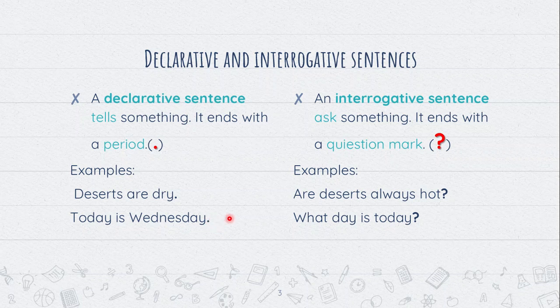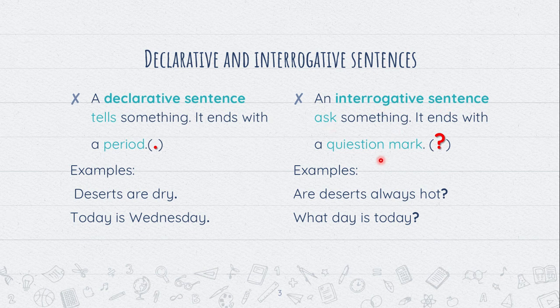This is the language class. These are examples that tell something, declare something. Let's go to interrogative sentence. An interrogative sentence asks something. It ends with a question mark. It requires you to give information. Are deserts always hot? What day is today?